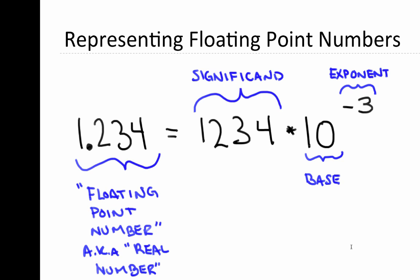Internally in MATLAB, we represent floating point numbers as a significand — an integer — multiplied by a base (either base 10 or base 2) raised to some exponent. For example, take a large integer significand like 1234, multiply it by 10 to the power of negative 3, and it becomes 1.234. The opposite effect happens with a positive exponent, multiplying by 1000 instead. That's effectively how MATLAB stores information in computer memory.